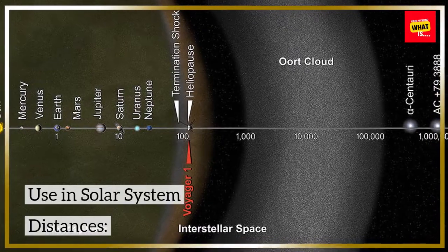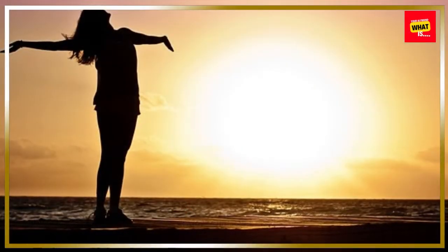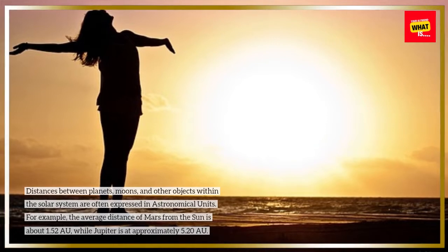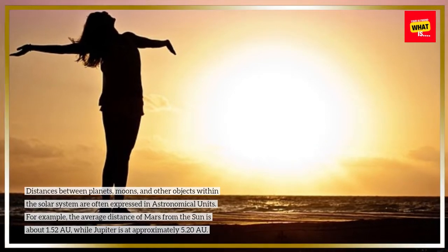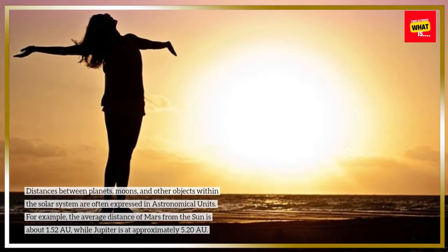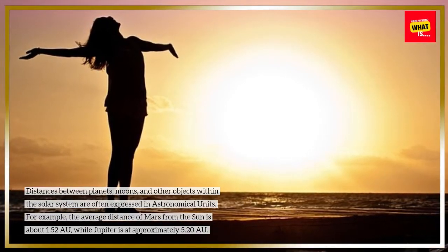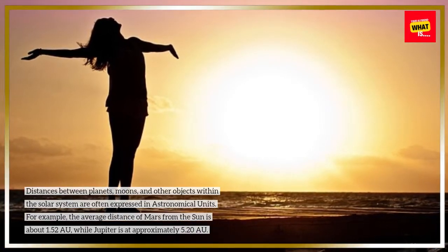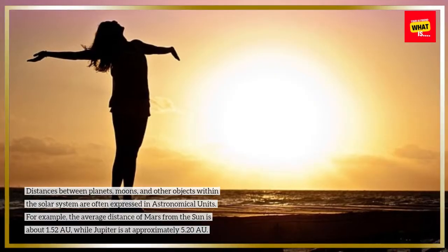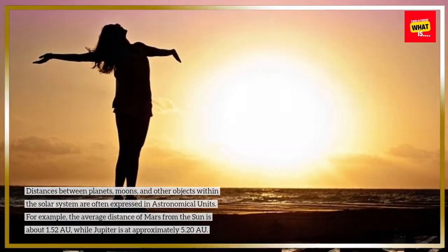Use in solar system distances: Distances between planets, moons, and other objects within the solar system are often expressed in astronomical units. For example, the average distance of Mars from the Sun is about 1.52 astronomical units, while Jupiter is at approximately 5.20 astronomical units.